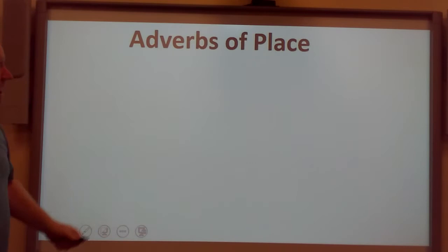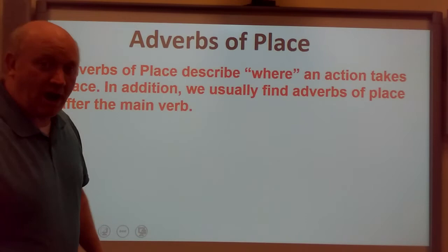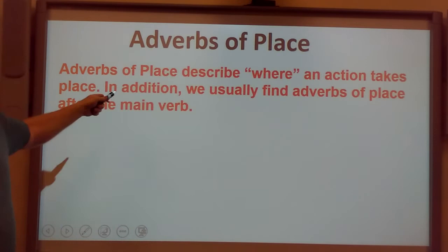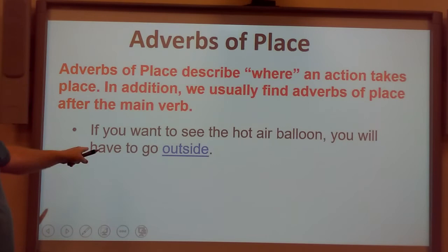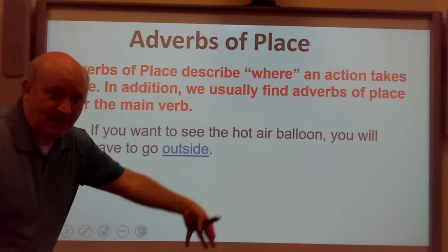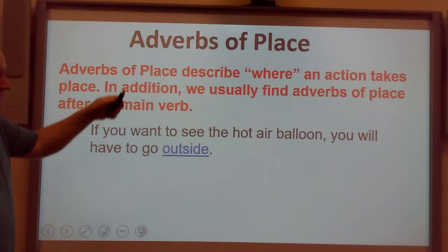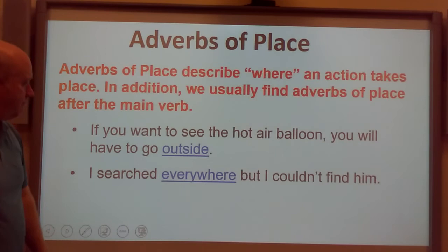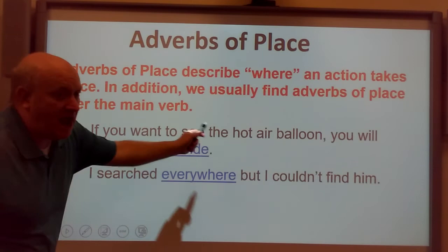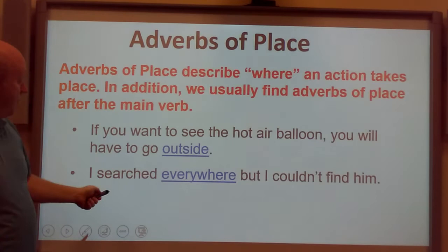Now we're going to talk about adverbs of place — where. Adverbs of place describe where an action takes place. We usually find adverbs of place after the main verb. If you want to see the hot air balloon, you will have to go outside. Where will you have to go? Outside. Outside is an adverb because it's talking about where. I searched everywhere, but I couldn't find him. Where did I search? Everywhere. We usually find adverbs of place after the main verb — my main verb is searched.